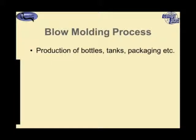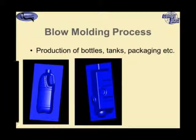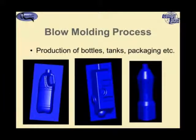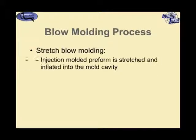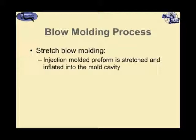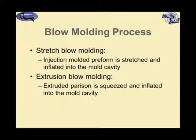The blow molding process is used for production of a wide number of things: bottles, tanks, packaging, and various industrial or automotive components. It has a lot of flexibility, and there are basically two main types. We have stretch blow molding, where the injection-molded preform is stretched and inflated into the mold cavity, and we have extrusion blow molding, where a parison is extruded down between two molds, the molds close around the parison, and then it's inflated into the cavity.